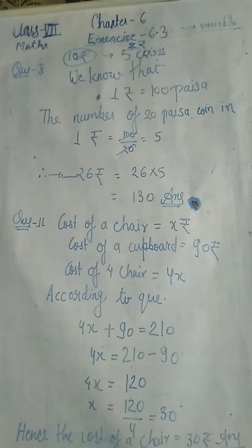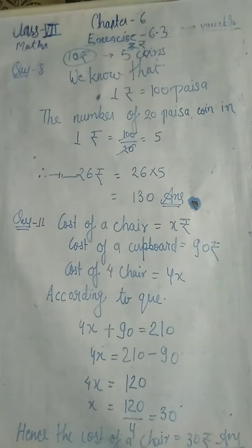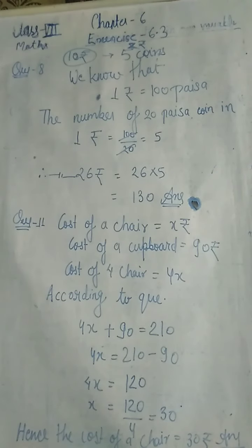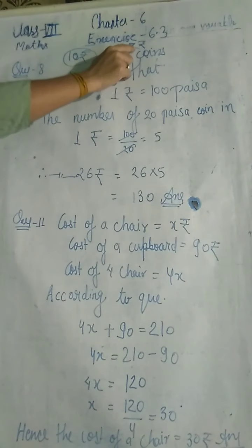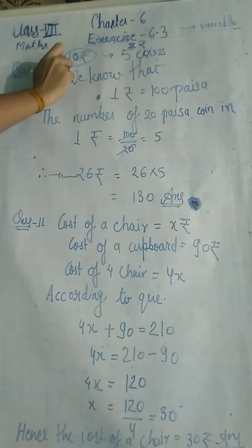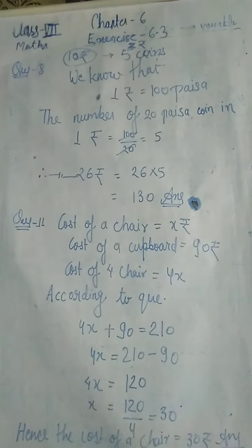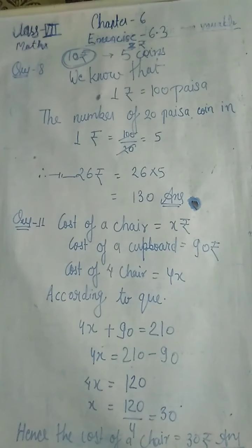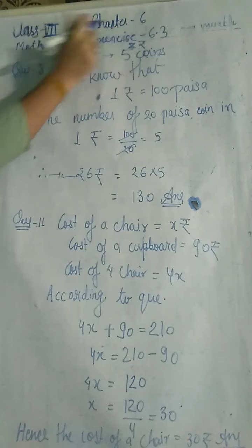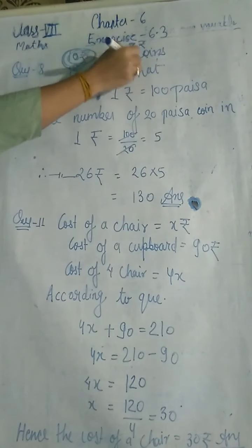Matlab kya hai? Agar aap 2 rupees ke 5 coins lein, toh unki value 10 rupees ho jaayegi. Toh number of coins nikalne ke liye kya kiya? Jo value hai — 10 rupees — usme coin ki value ka divide kar diya — 2 ka. Toh kya aa gaya? Number of coins aa gaya. Is question mein isi ki zaroorat hogi.